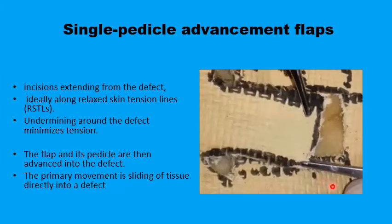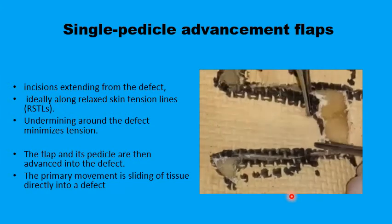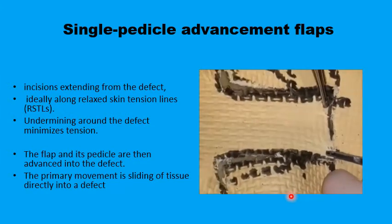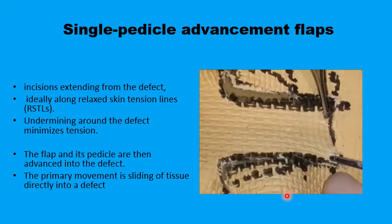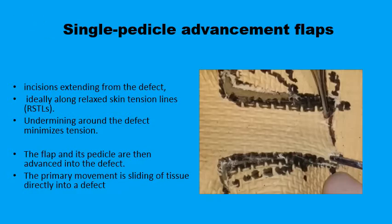The Burow's triangles should be about half the breadth of the defect. Once they are removed, the flap can slide in a linear movement to fill up the defect and is sutured first at the leading edge apices, then at the area of the Burow's triangles where you have maximum tension, followed by suturing of the remaining lateral parts of the flap.